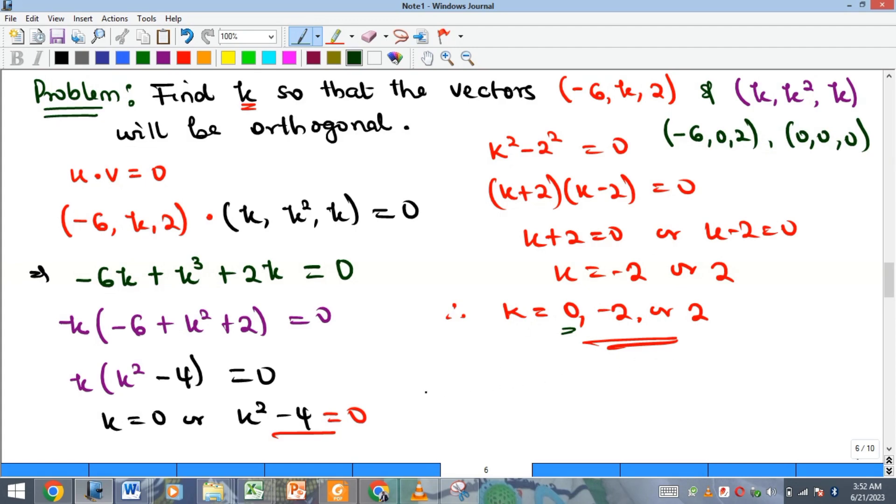So can we check if this is going to give us orthogonal vectors? Taking the dot product: minus 6 times 0 is already 0, 0 times 0 is 0, 2 times 0 is 0. So you see the dot product is actually zero. You can also check it with the other two values to see if those values will actually produce orthogonal vectors.